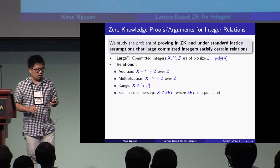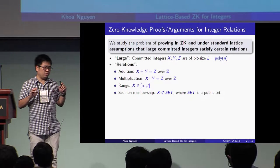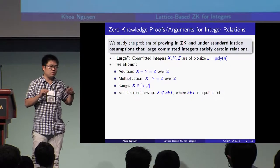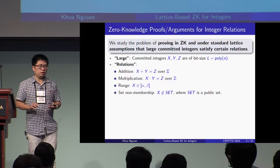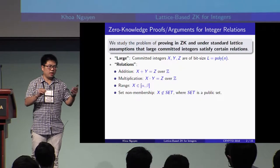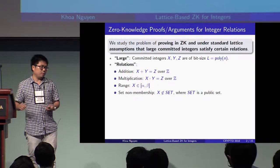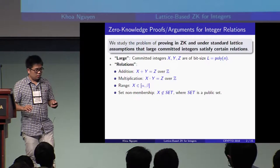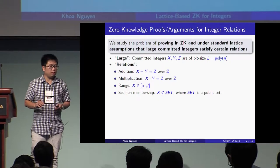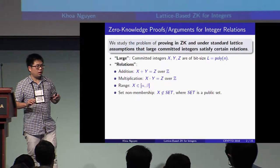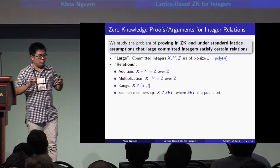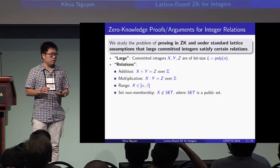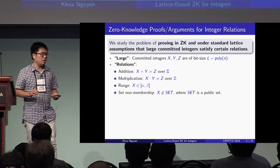We also consider range relations where we want to prove that a committed integer X belongs to a range [alpha, beta], where alpha and beta may be public or hidden. And we also consider set non-membership arguments where we have a public set and we want to prove that our committed integer doesn't belong to that set.